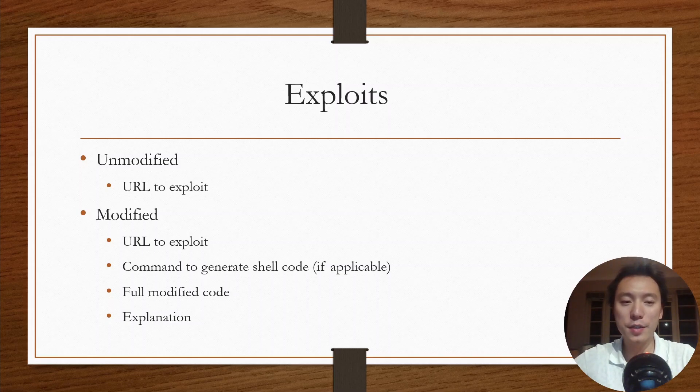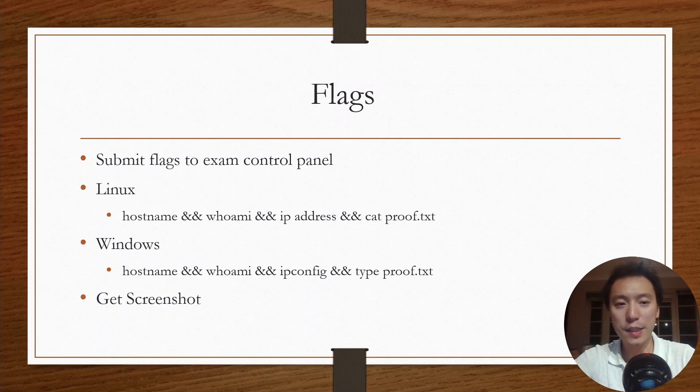It's going to be pretty hard to record this stuff after the exam if you haven't done so while you're running the exploits. For unmodified exploits, all you need to do is provide a link to the exploit. If you've modified the exploit in any way, you're going to have to provide a link, you are going to provide the command that you use to generate the shellcode, and you're also going to include the full modified code and then a short explanation of why that modification was needed.